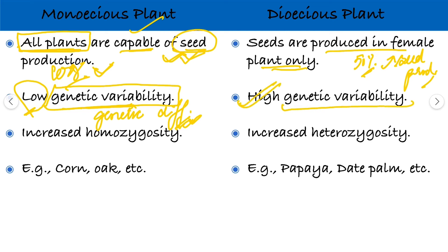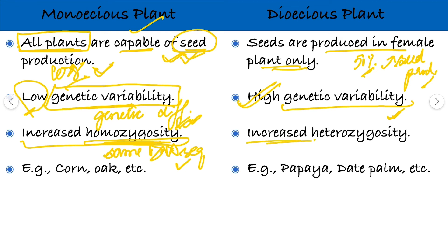In dioecious plants, there are maximum, high chances of formation of plants which differ in their genotypes. In case of monoecious plants, there is increased homozygosity — individuals that inherited the same DNA sequences for a particular gene. But in case of dioecious plants, there is increased heterozygosity — individuals that inherited different forms of a particular gene.